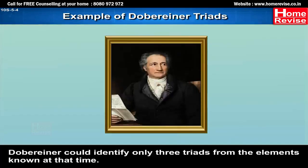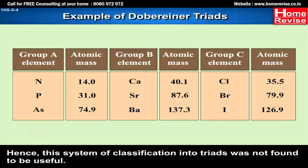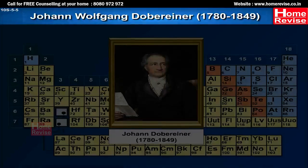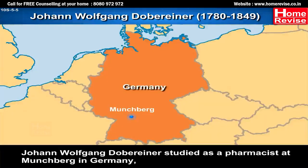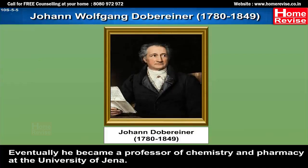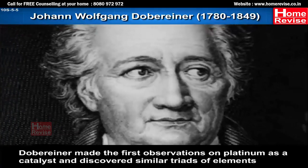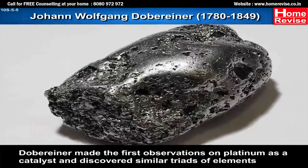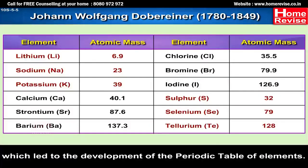Dobereiner could identify only three triads from the elements known at that time. Hence, this system of classification into triads was not found to be useful. Johann Wolfgang Dobereiner studied as a pharmacist at Munchberg in Germany, then studied chemistry at Strasbourg, and eventually became a professor of chemistry and pharmacy at the University of Jena. He made the first observations on platinum as a catalyst and discovered similar triads of elements which led to the development of the periodic table.